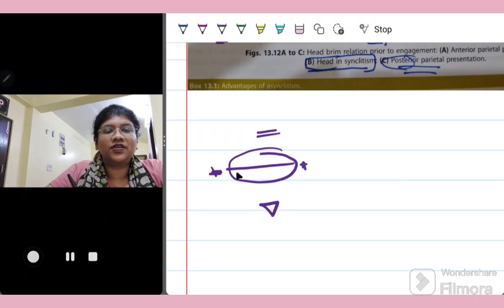So this is the sagittal suture of the fetus. So ideally, this should lie in the center, corresponding at the level of ischial spines to call it as engaged head.